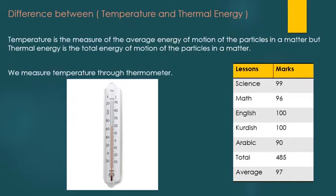Now for this new slide, I'm going to talk about the difference between temperature and thermal energy. Temperature is the measure of the average energy of motion of the particles in a matter, but thermal energy is the total energy of motion. If you look at this small picture I have up here with lessons and marks on it, we're going to act like these lessons are like the particles in a matter. Temperature is the average energy — so imagine each subject is a particle: science, math, English, Kurdish, and Arabic. To find the temperature, I'm going to sum all the marks and then divide by the number of particles.